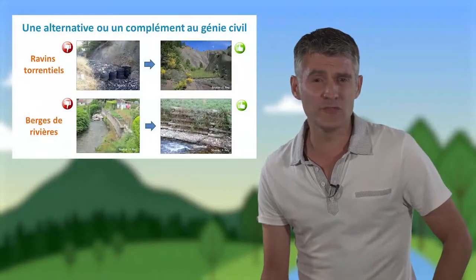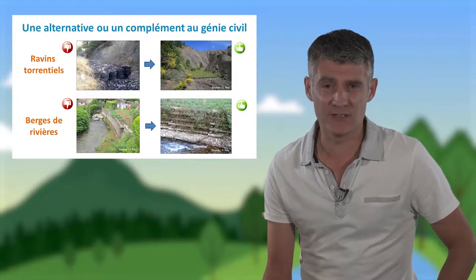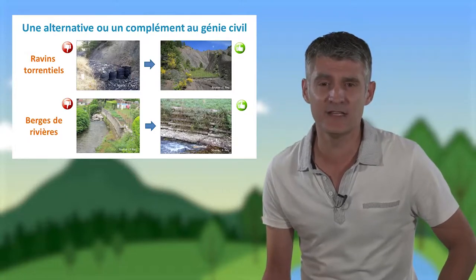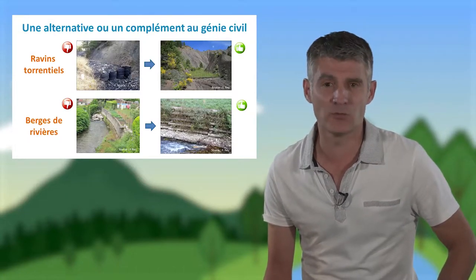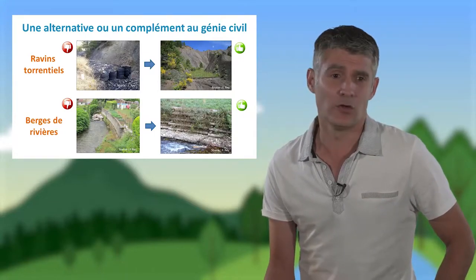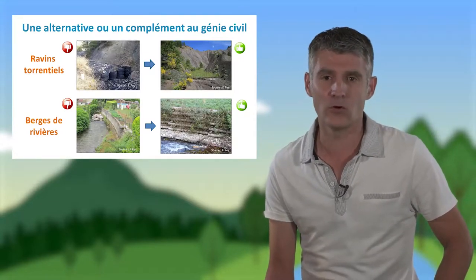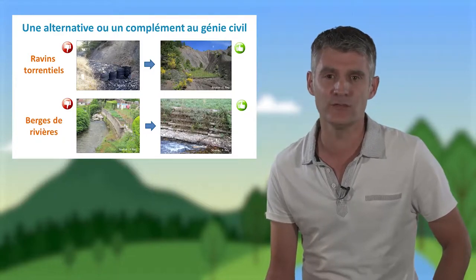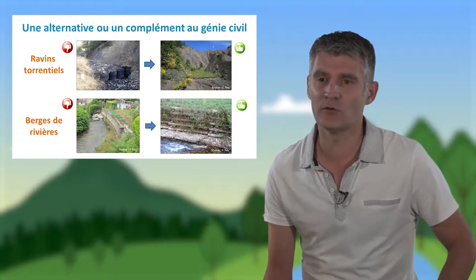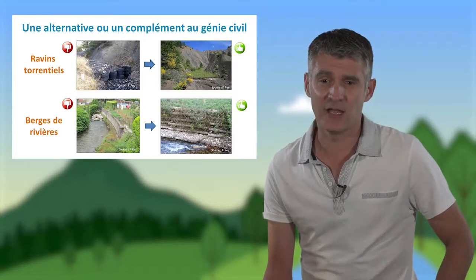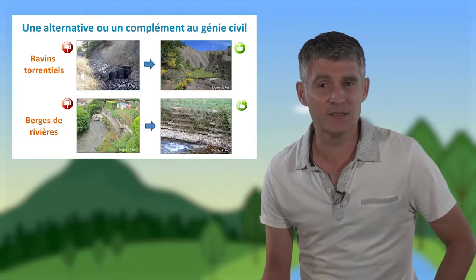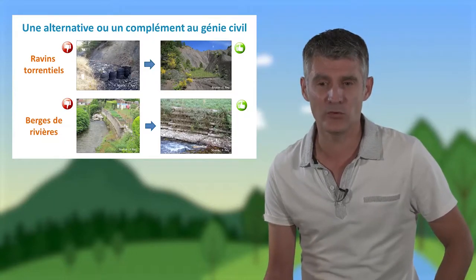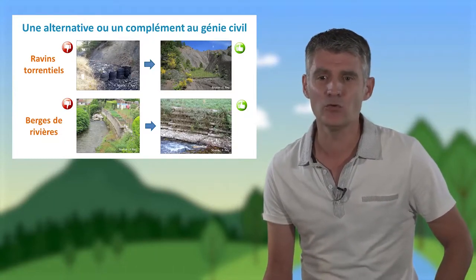Le génie végétal peut aussi constituer une alternative ou un complément au génie civil. Par exemple, dans les ravins torrentiels, où on cherche à mettre en place des seuils pour casser l'énergie des torrents, on peut avantageusement remplacer des matériaux inertes tels que pierres, béton, métal ou pneus par des matériaux plus nobles : du bois mort et du bois vivant. Sur les berges de rivière, des méthodes alternatives comme les caissons végétalisés, structures en bois protégeant les habitations, intègrent une composante végétale.